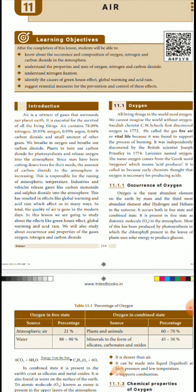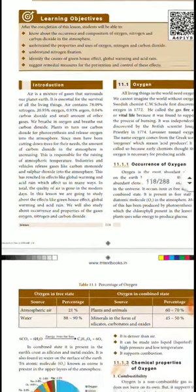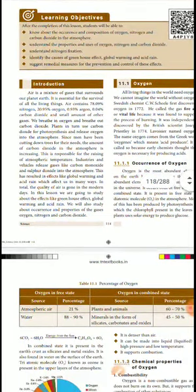This leads to some other problems — industries and vehicles release gases like carbon monoxide and sulfur dioxide into the atmosphere. This has resulted in the effects of global warming and acid rain, which affect us in many ways.